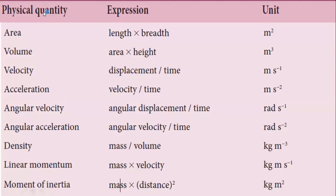Here, some of the physical quantities, their expressions and units are given. Let us go one by one. Area is nothing but length into breadth. The unit for length is meter and breadth is also meter, so we write it as meter squared. The next one is volume — length into breadth into height, or area into height. The unit for area is meter squared and height is meter, so volume is meter cubed.